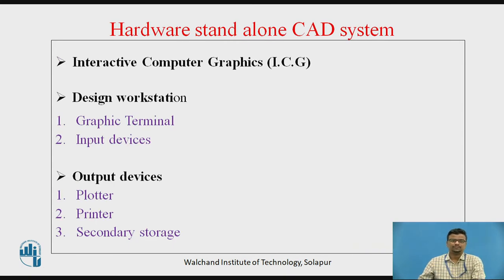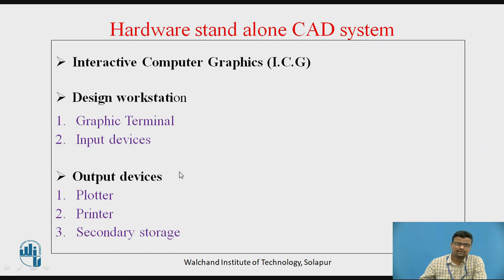Now we are discussing the hardware standalone CAD system. There is always the use of interactive computer graphics (ICG) in the computer-aided design system. There are two main components: the design workstation and the output devices. The design workstation consists of the graphic terminal — also called the cathode ray tube or picture tube — along with input devices. Output devices include the plotter, printer, or secondary storage.